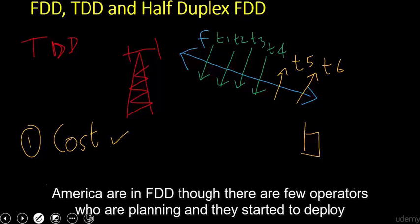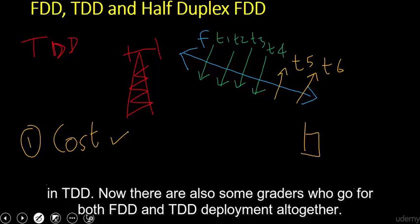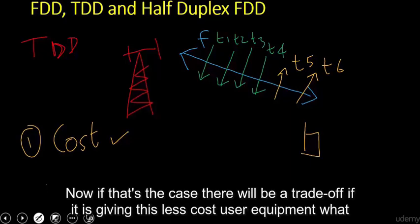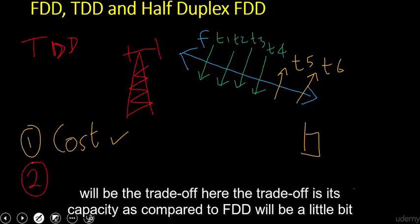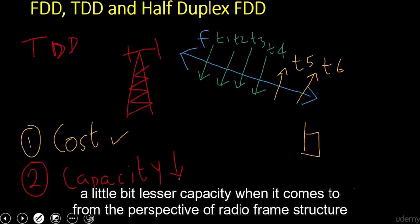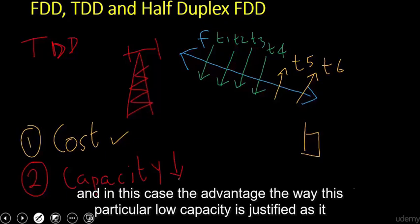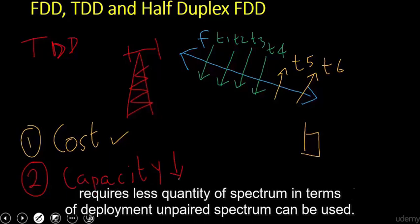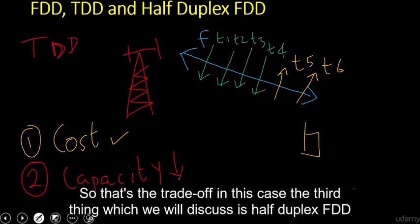Some operators go for both FDD and TDD deployments together. The trade-off with TDD is that its capacity compared to FDD will be a little bit lower — it will not have the same capacity as FDD. However, this lower capacity is justified by the fact that it requires less spectrum; just an unpaired spectrum is sufficient for deployment.